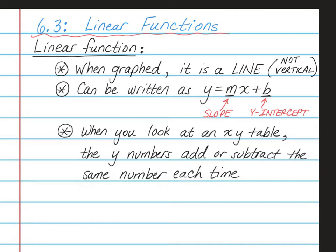Something else I wanted to point out is that if you look at the word linear, it has the word line built into it. So when you see the word line, you know that it's going to be a line — in the form Y equals MX plus B. The numbers add or subtract each time, and that tells you that it has a constant slope that never changes. Please pause the video for a moment and make sure that you're all caught up with your writing.